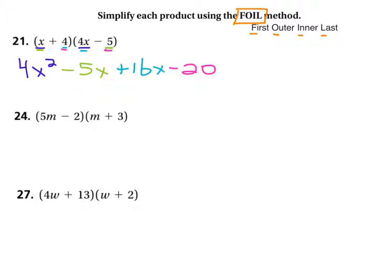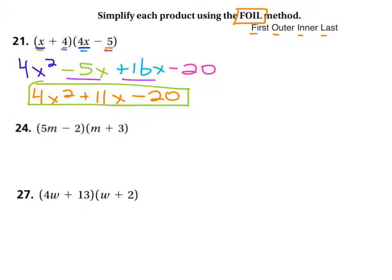And what do we get, what do we have to combine? We have to combine these x terms because they are like terms. And what do we get as a result? We get 4x squared, negative 5 plus 16 becomes positive 11x, and then minus 20. And we'll box our answer. We're going to do the same thing for the rest of these.